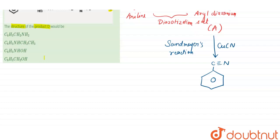Here Sandmeyer's reaction took place. This is our benzonitrile. This is our product B.